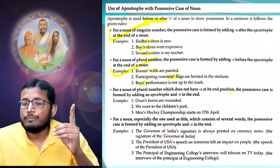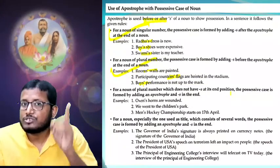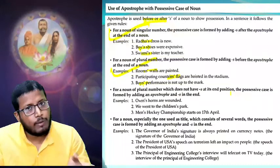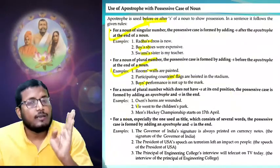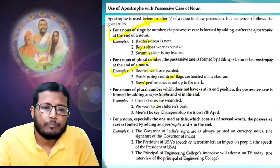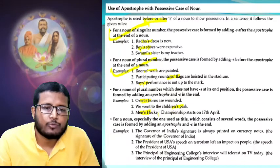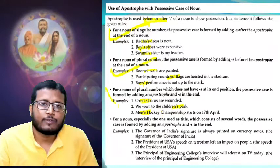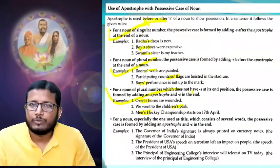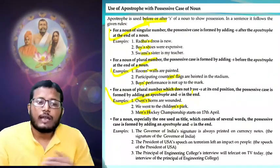For a noun of plural number which doesn't have S-ending — for example children — we remember there was no S-ending, so we gave a comma and then added S also: children's. Same for men's — no S-ending, so comma then S. These examples we can confirm have no S-ending, therefore we give comma and then add S also. This part is also complete.